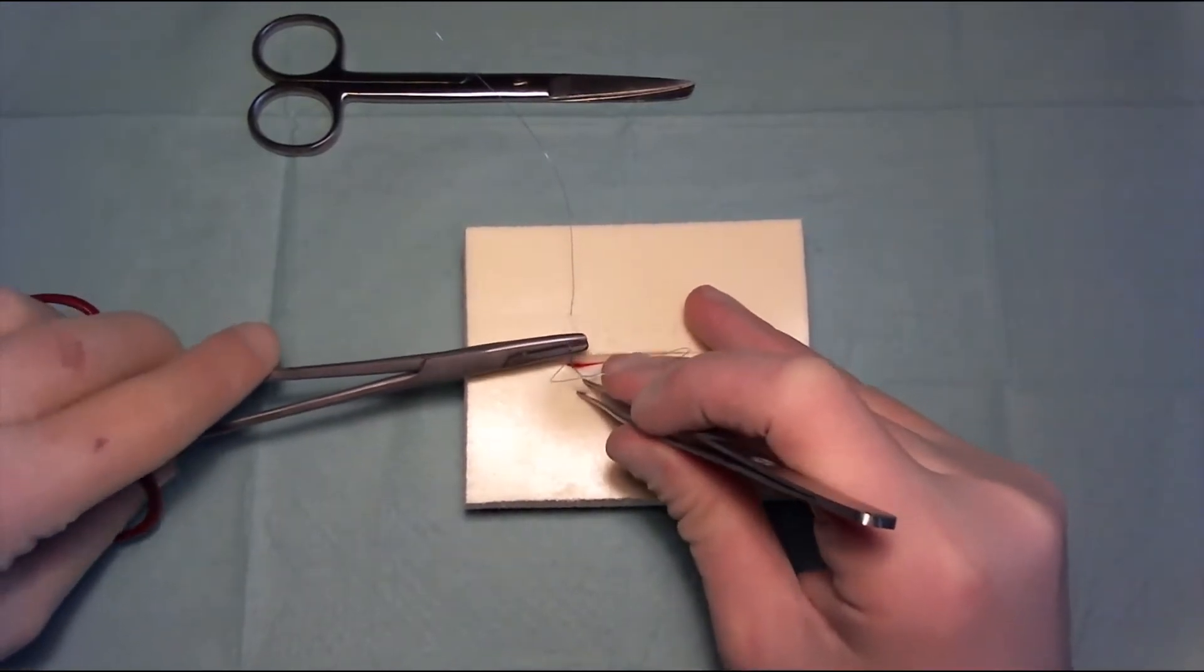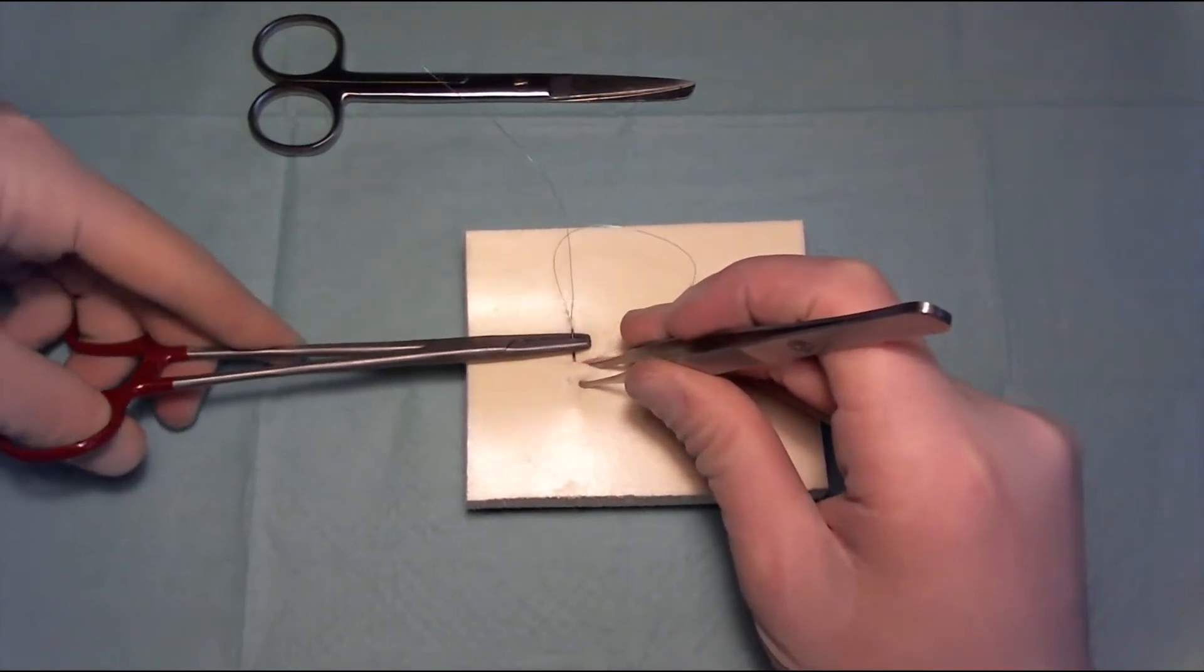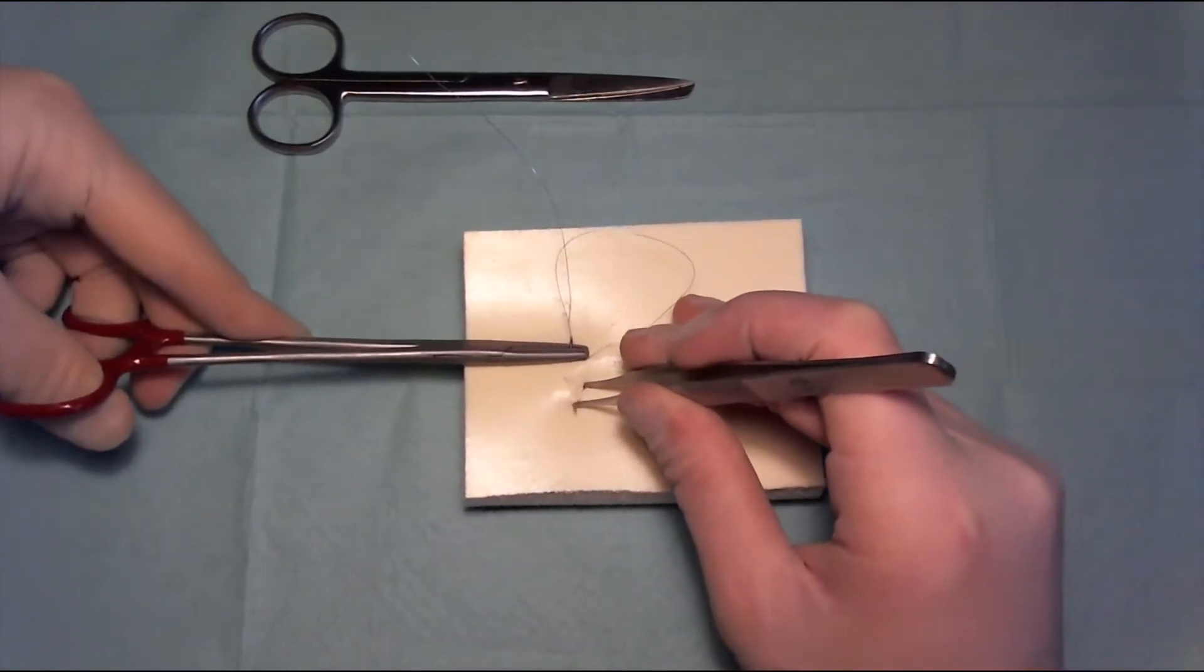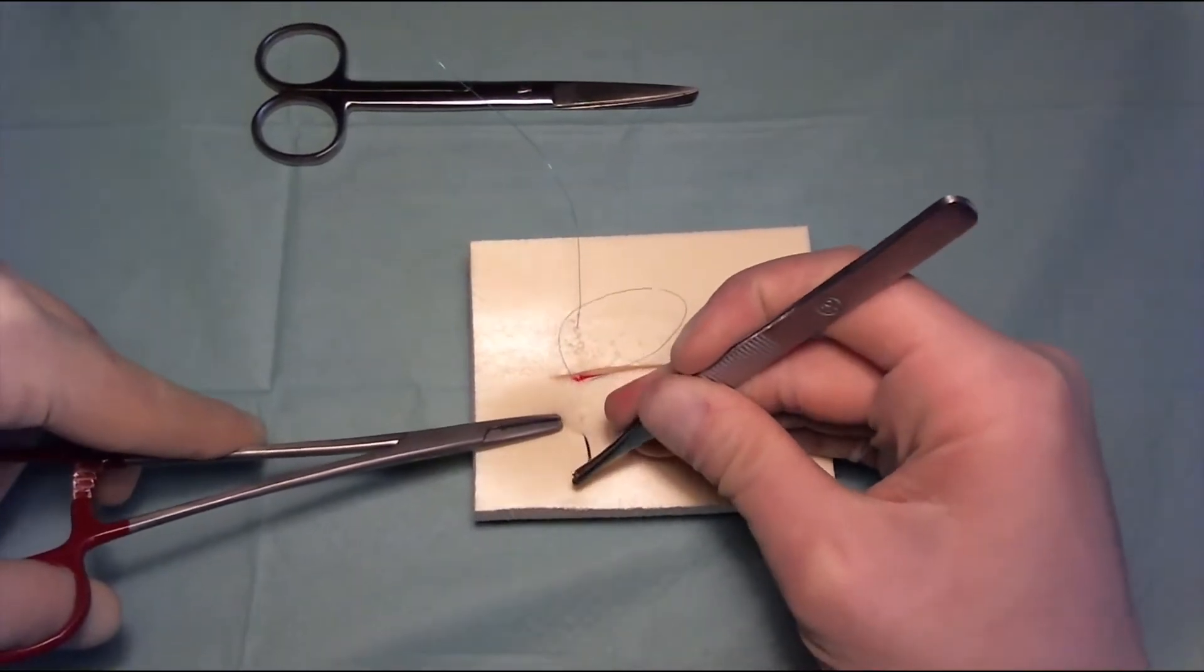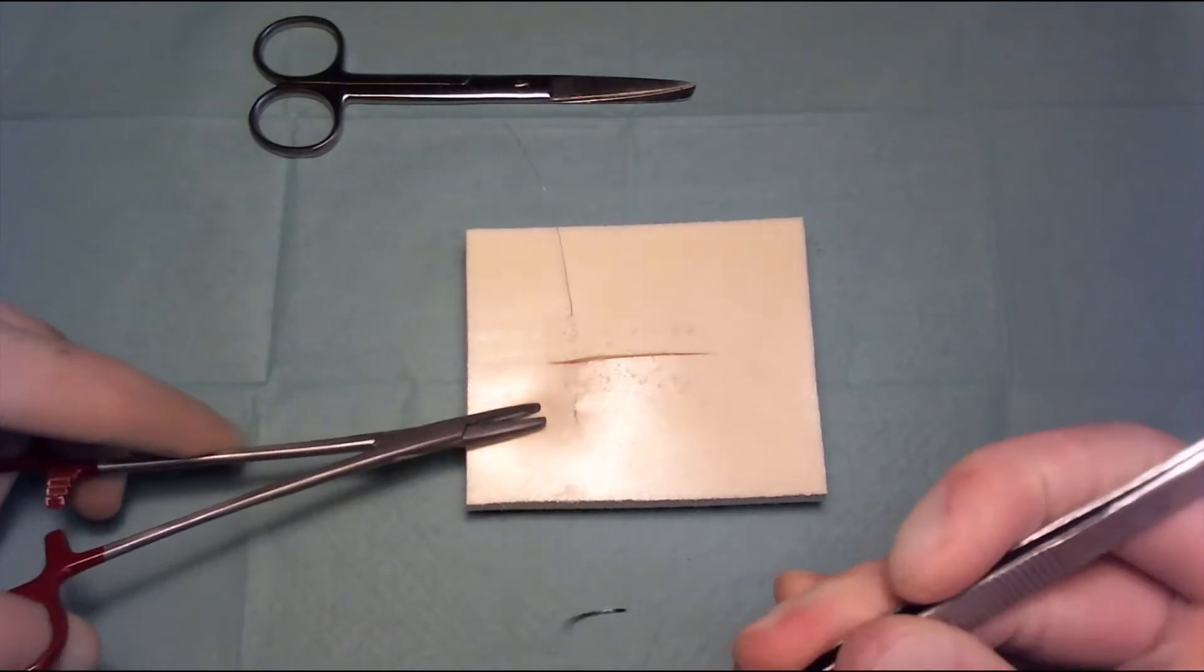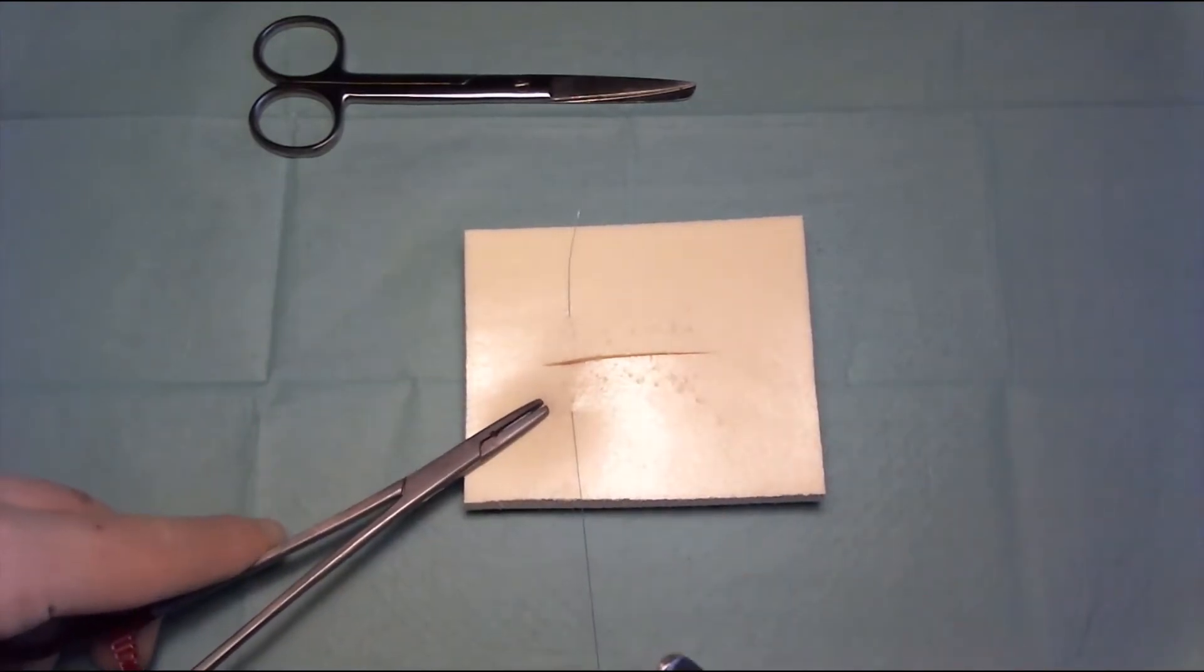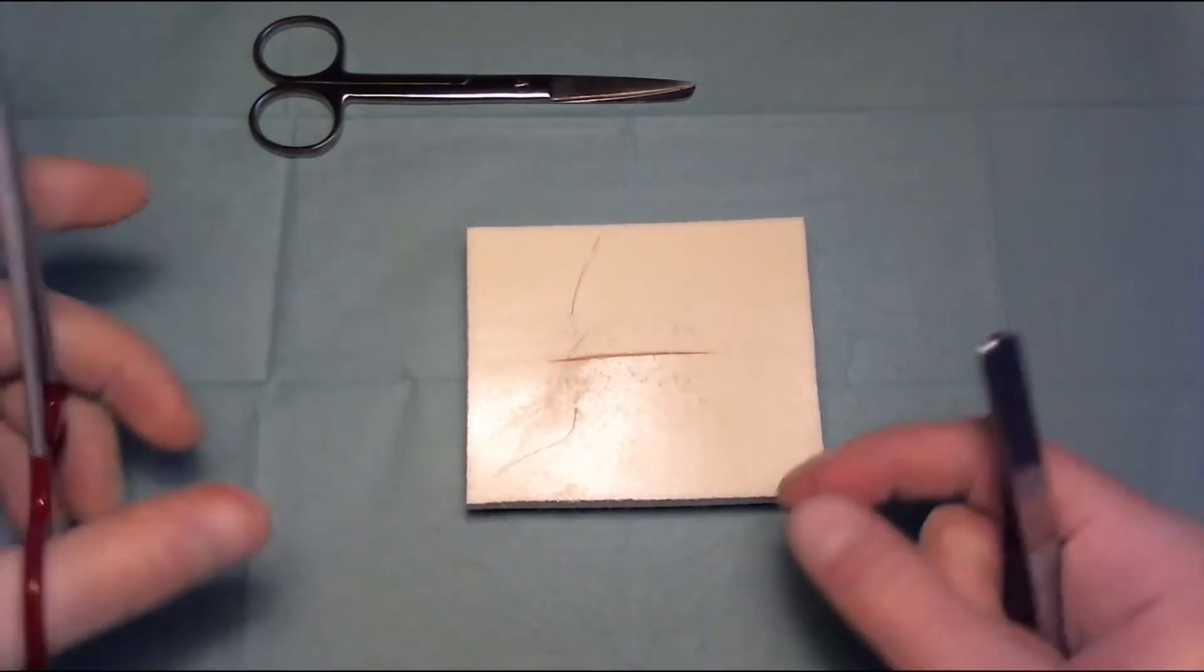So actually we're just doing a simple interrupted suture right now, but we're going to do an extra step at the end. That's going to make our Donati or vertical mattress suture special and a little bit different.